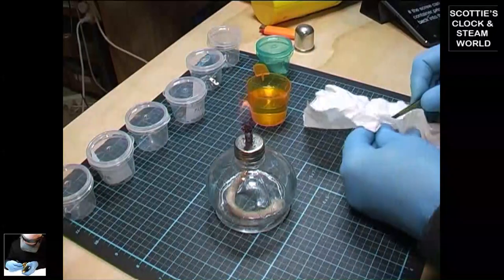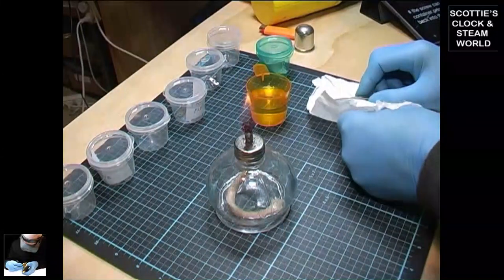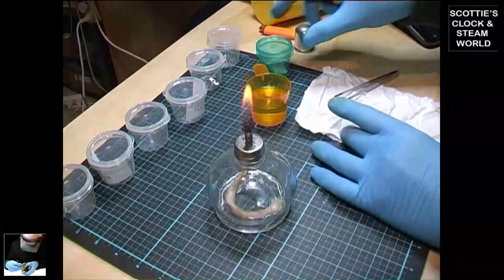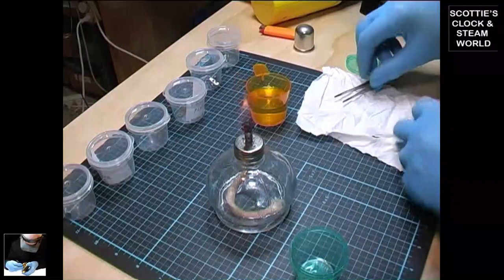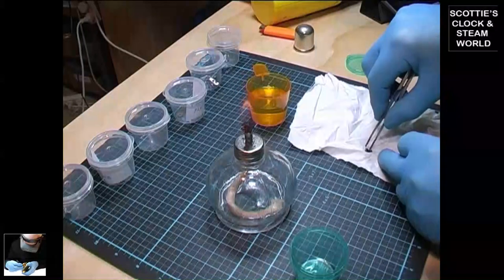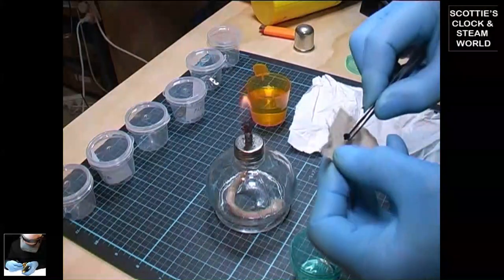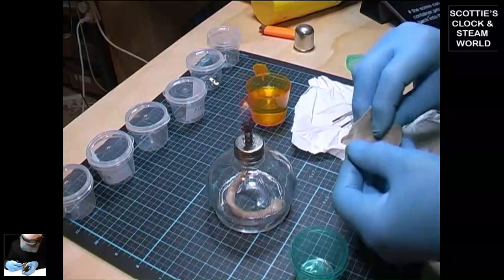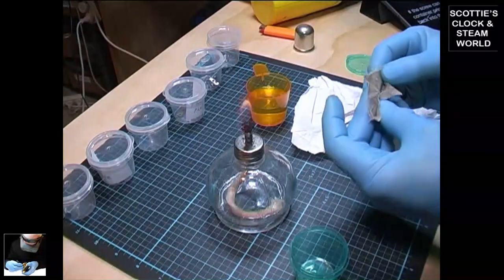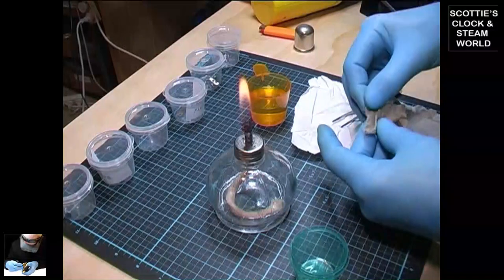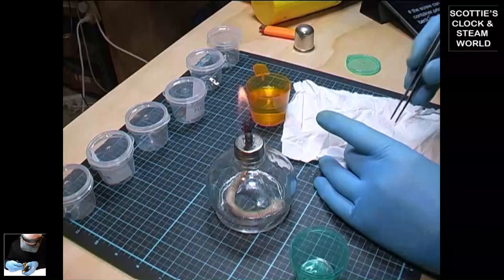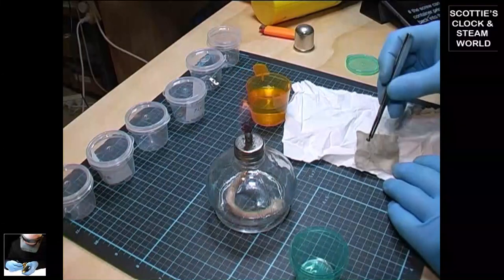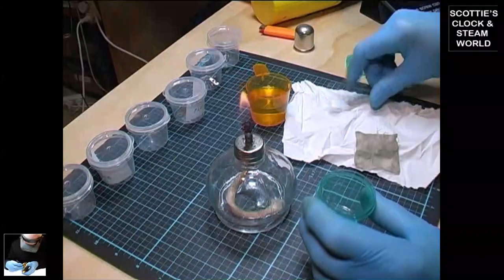Dry the screw on a clean piece of cloth. Then place it on the oily rag and give it a slight coating of oil. Then place it back into its container.